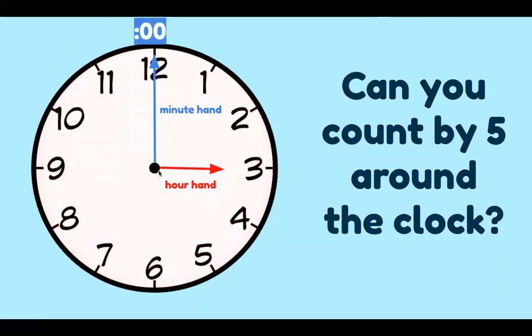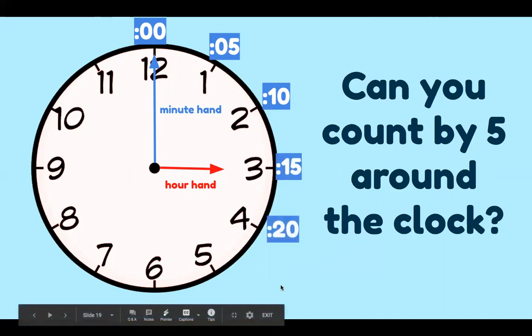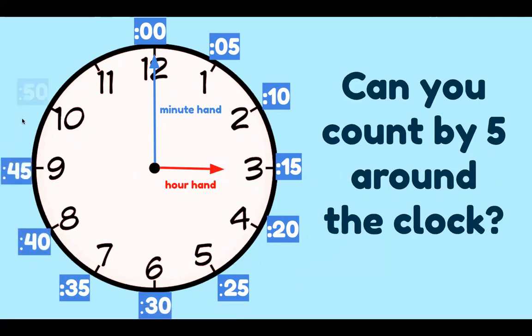Now around the outside of the clock I'm gonna put numbers to show you the minutes. Now these aren't on most clocks but they are on the clock in our classroom. So we start at o'clock zero zero. So this right now says three o'clock. Now can you count by five? We go zero, five, what comes next? Ten, count with me, 15, 20, 25, 30, 35, 40, 45, 50, 55.